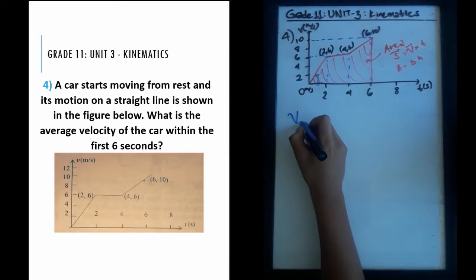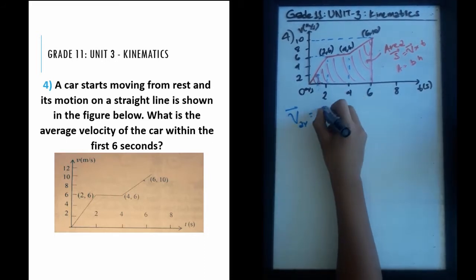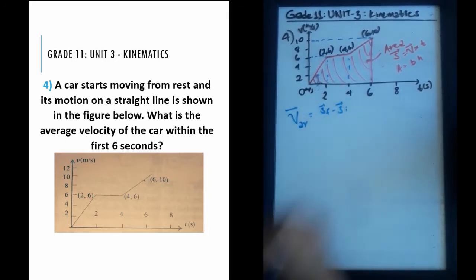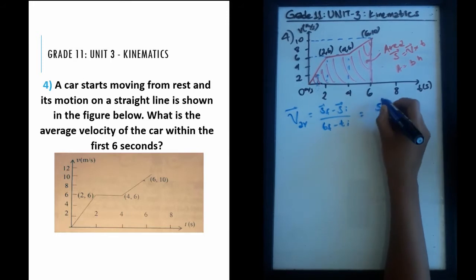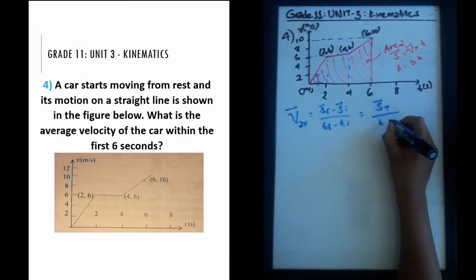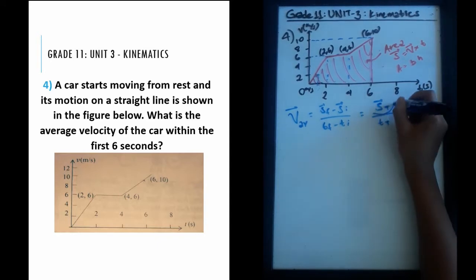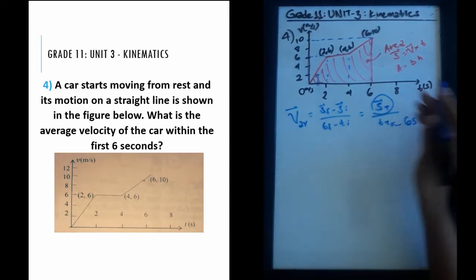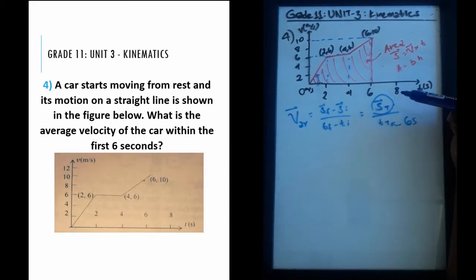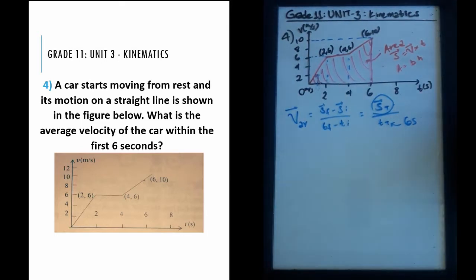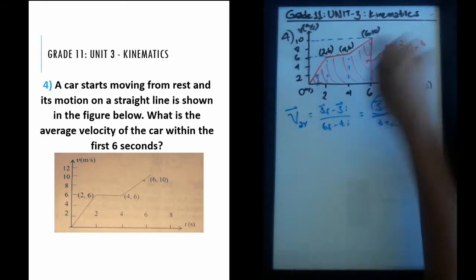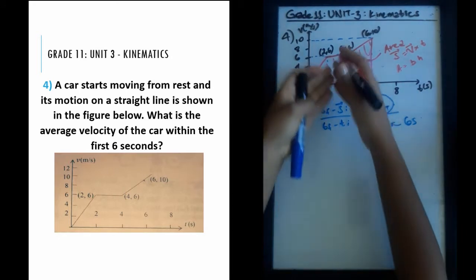The average velocity is usually equal to displacement final minus displacement initial, divided by time final minus time initial. In this case we can use total displacement over total time. We're already given the time as six seconds, so if we find the displacement, we can find the average velocity. The problem is velocity is changing — it's not constant throughout this motion — so we need to find the area underneath the graph.